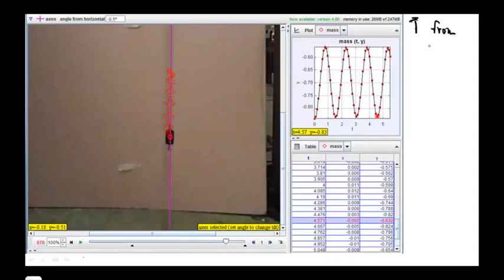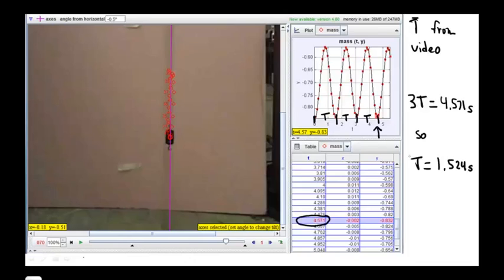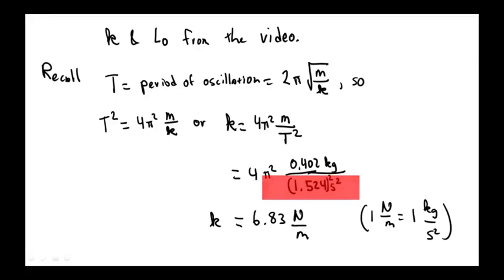The period is just the time interval for one complete oscillation. So let's measure the time interval for a number of oscillations say three. Say by starting here at release at t equals zero and then looking three oscillations later when the mass is again at the lowest point in the oscillation. We take the corresponding time and from that we can compute the average period which we find to be 1.524 seconds. Plugging this in we estimate the spring constant to be 6.83 newtons per meter.